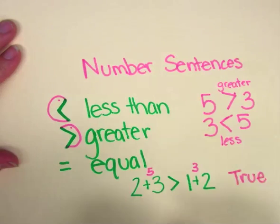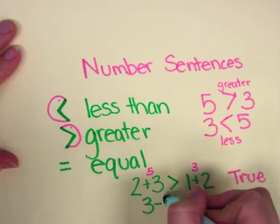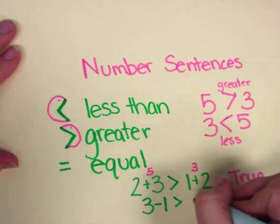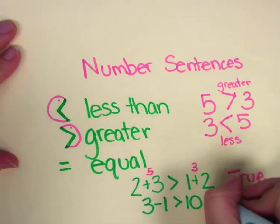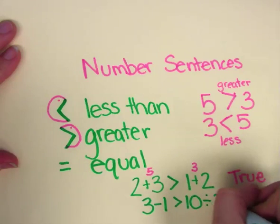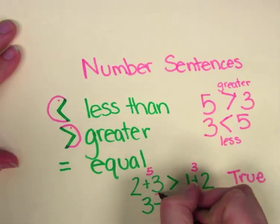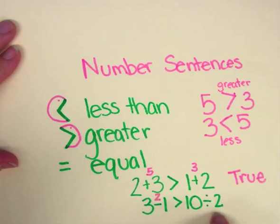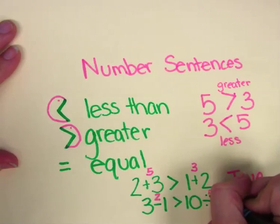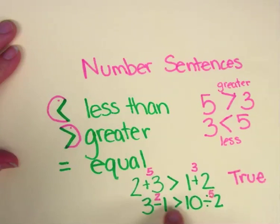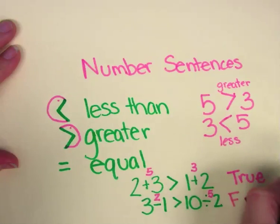Another number sentence I may come across is this one. In this number sentence, I have three minus one. That equals two. And ten divided by two. That equals five. So I have two is greater than five. That is not true. That is a false number sentence.